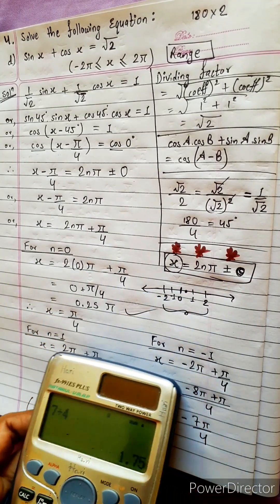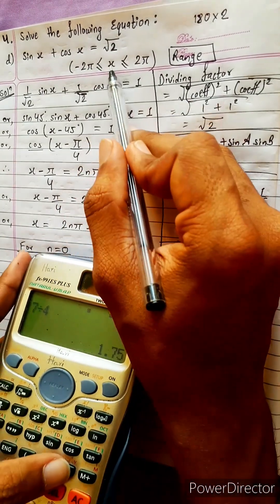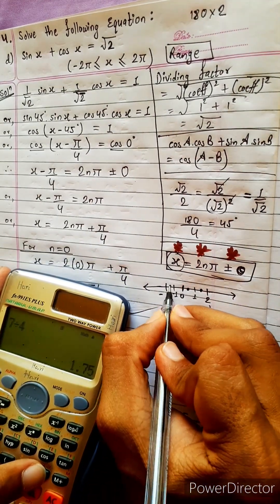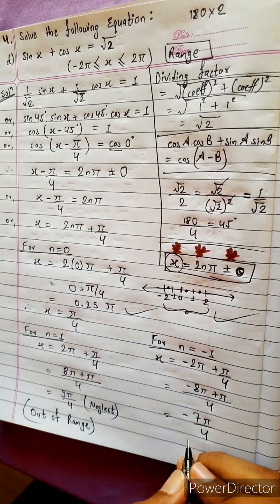7 by 4 means 1.75. 1.75 belongs to this range or not? 1.75 belongs somewhere there. Oh, negative. Negative also it belongs. Okay, it satisfies. So this also satisfies.